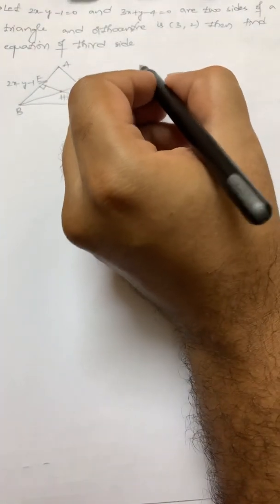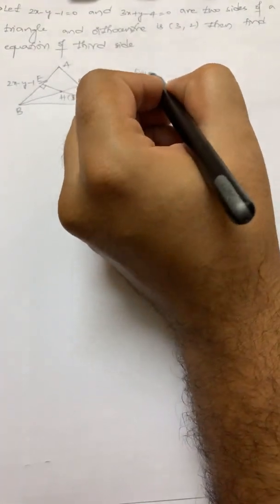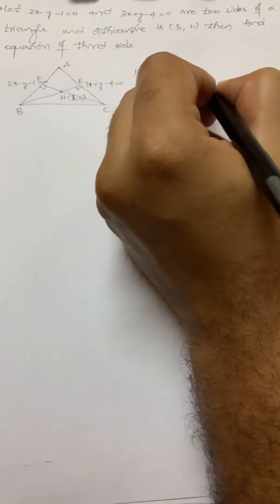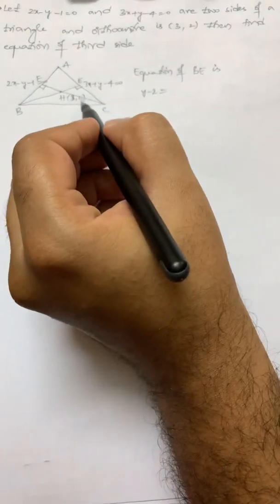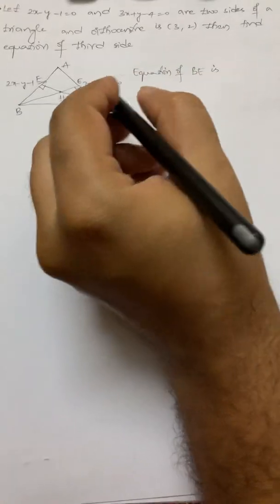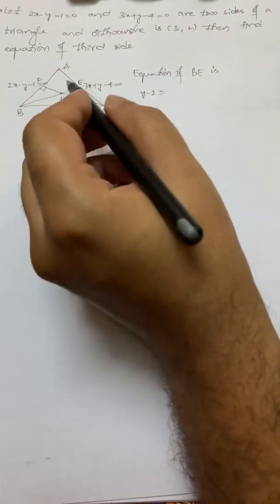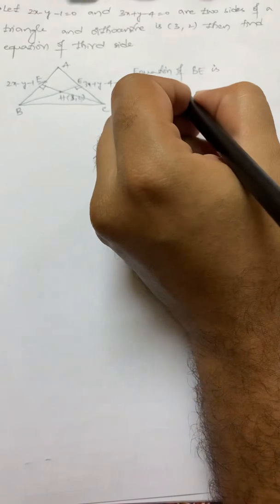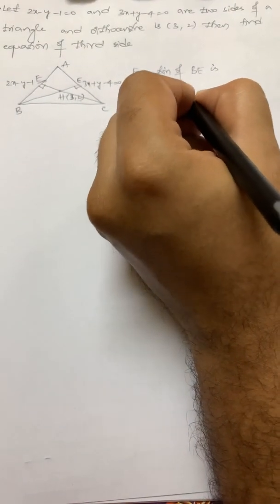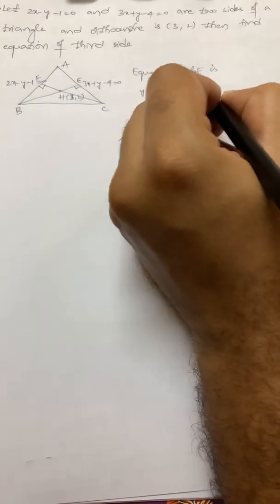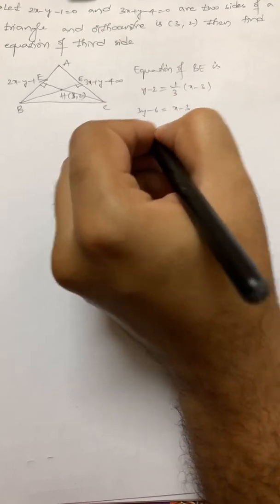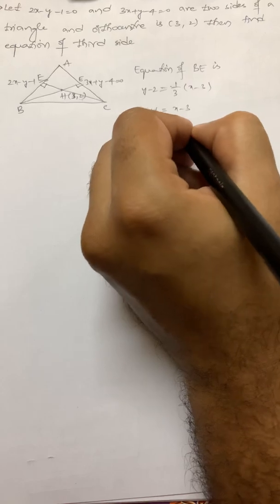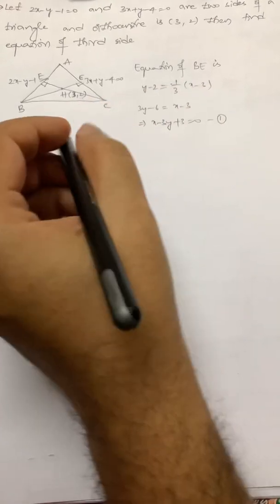The equation of altitude BE is: since B passes through (3, 2), y minus 2 equals slope of BE, which is the perpendicular slope of AC. The perpendicular slope of AC is 1 by 3. So y minus 2 equals 1/3 times (x minus 3), giving 3y minus 6 equals x minus 3, which simplifies to x minus 3y plus 3 equal to 0.